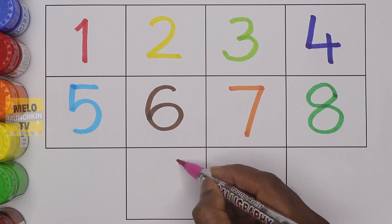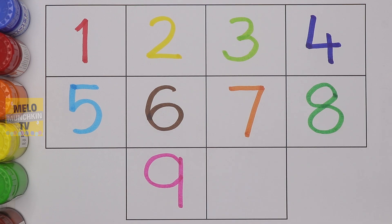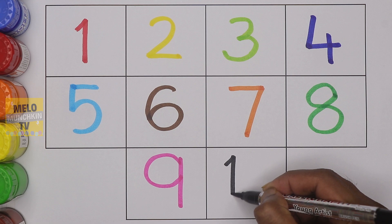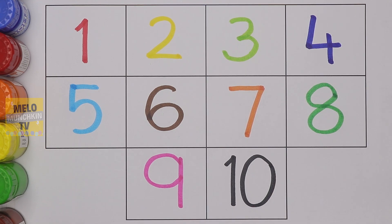Pink color, this is number nine. Number nine. And finally, black color, this is number ten. Number ten.